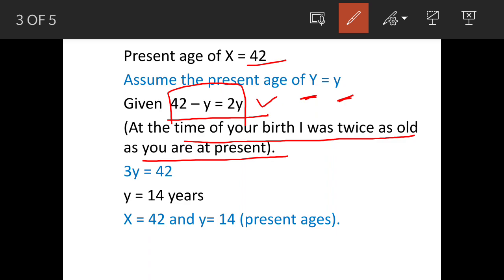So with this if you further solve it, you get 3y is equal to 42 and y is equal to 14 years. So that means X is now 42 years and Y's present age is 14 years because this small y we assumed as the present age of Y.